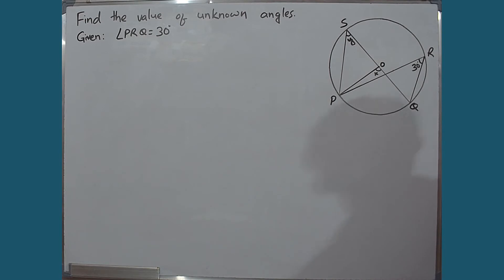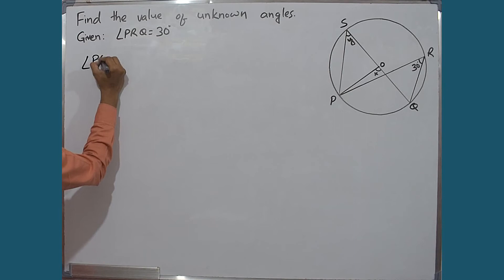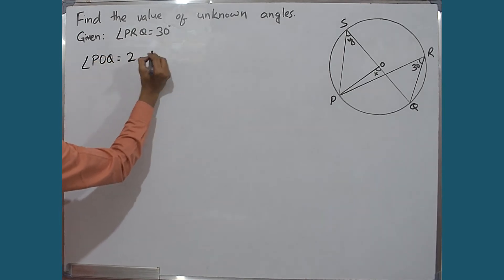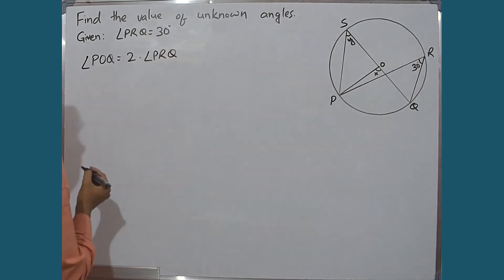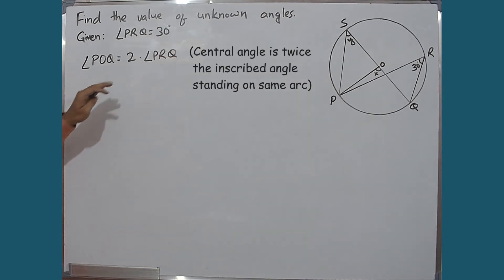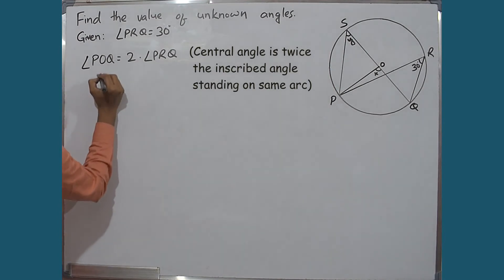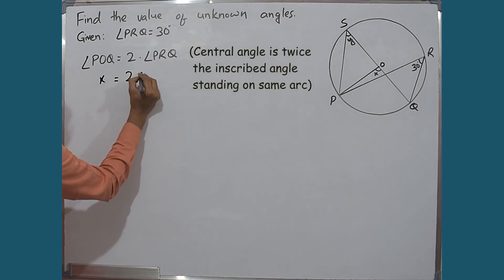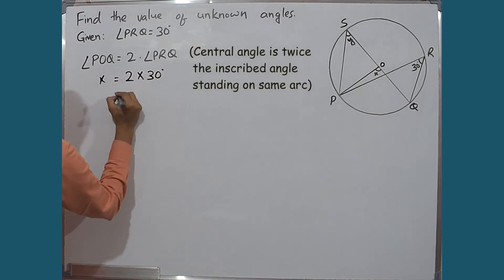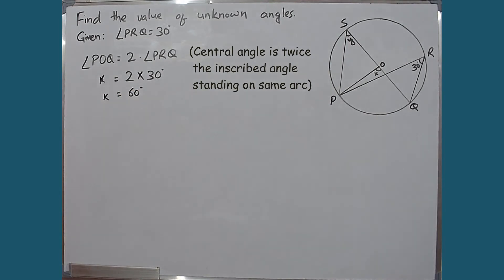So we can write angle POQ is equal to twice of angle PRQ, the reason being the central angle is twice the inscribed angle standing on the same arc. So angle POQ is x, and x is equal to 2 into 30 degrees, which equals 60 degrees. Therefore, the value of x is 60 degrees.